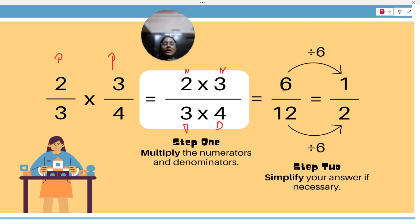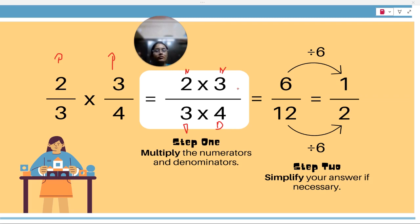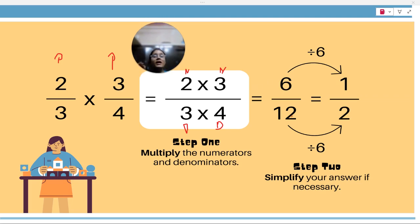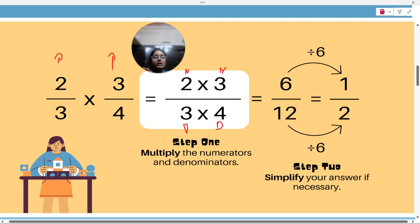Now we have to put this in simplest form, which is the standard form. If you have seen my previous video about standard form, we use HCF. The highest common factor of 6 and 12 is 6. When we divide 6 by 6 we get 1, and when we divide 12 by 6 we get 2. So the answer is 1 by 2.